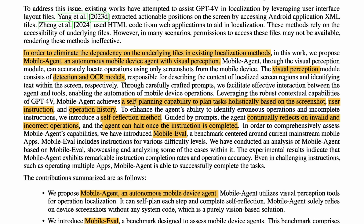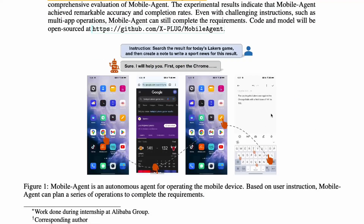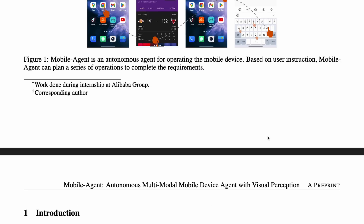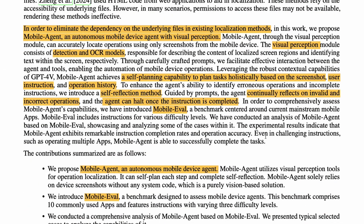One is a self-planning module and the second is a self-reflection module. The self-planning module takes your instruction and plans a sequence of steps to execute. It is based on the screenshot you provide, the user instruction, and the operational history. For example, this screenshot and instruction go into the system and the self-planning module plans the next set of steps — what all things need to be done.